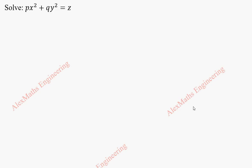Hi students, this is Alex. In this video we are going to solve the given partial differential equation. This is of the form capital P times small p plus capital Q times small q equal to capital R. Rewriting this, by comparison we know capital P is x square.